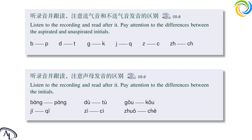听录音并跟读，注意声母发音的区别。Listen to the recording and read after it. Pay attention to the differences between the initials. 棒，胖，肚，兔，狗，口，鸡，漆，字，刺，桌，车。